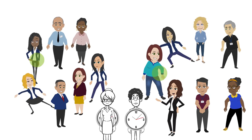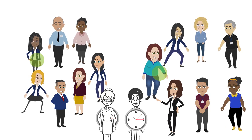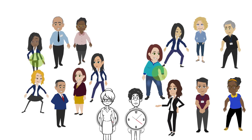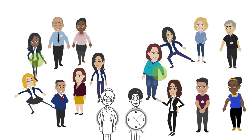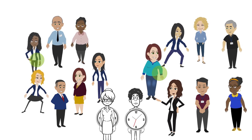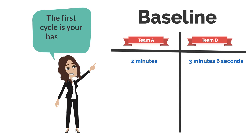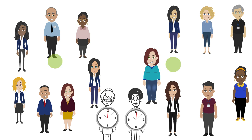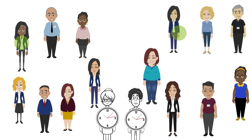Think about how you can reach your goal of reducing the cycle time. What can you do differently in the next cycle while adhering to the rules of the game? The first cycle is your baseline.